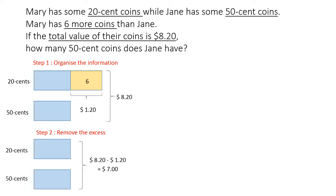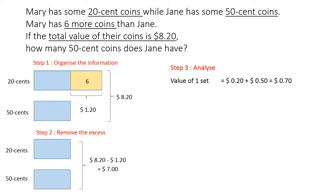Step three: let us analyze all the information presented. After we remove the 6 twenty cent coins, there will be an equal number of 20 cent and 50 cent coins. What this simply means is, for every 20 cent coin there must be a 50 cent coin. Therefore, the value of one set — which is the sum of one 20 cent coin and one 50 cent coin — gives us $0.70.